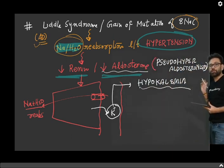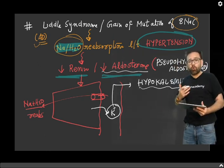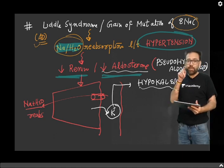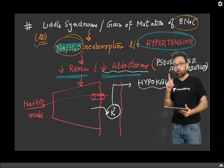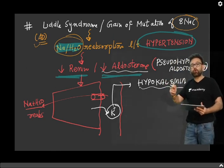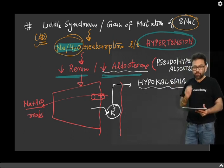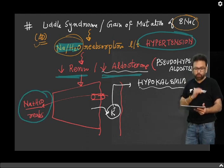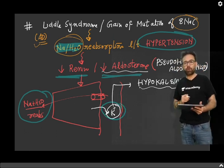Pseudo-hyperaldosteronism — why pseudo? Because although you are having hypertension and more reabsorption of water, aldosterone is low. Because this reabsorption of sodium is not because of aldosterone — aldosterone is suppressed — but because of the gain-of-function mutation of ENAC, through which aldosterone normally functions. When sodium is absorbed more, sodium and water are absorbed more, and of course potassium will be secreted, as a function similar to aldosterone.